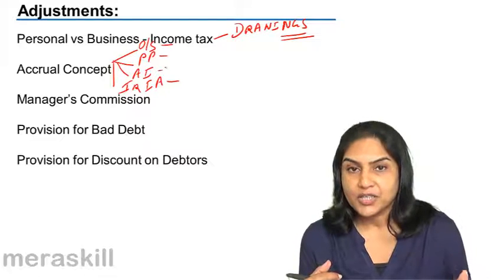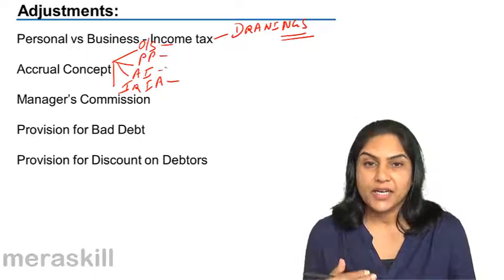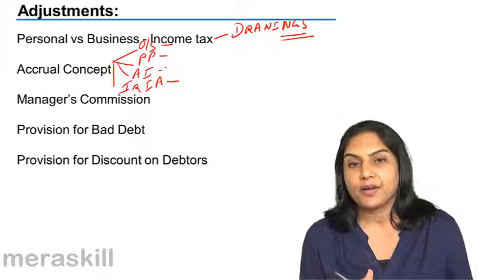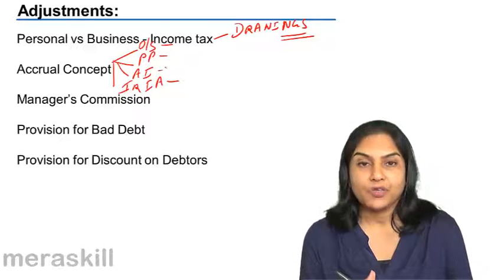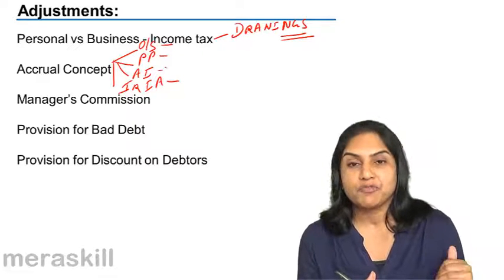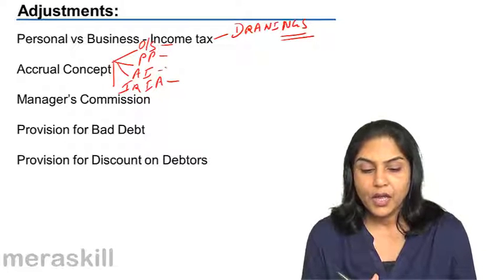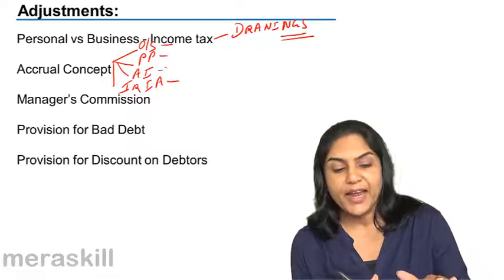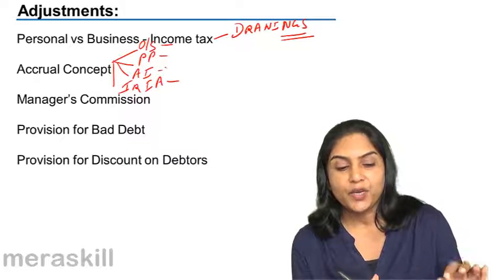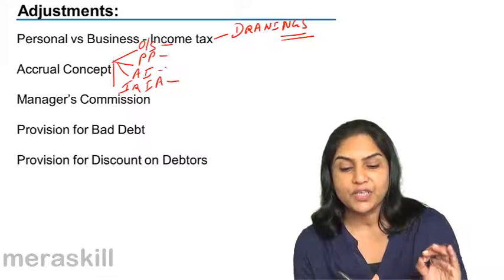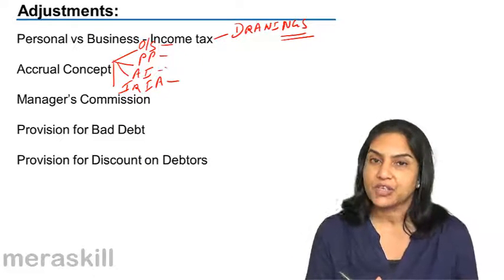As per the accrual concept, all expenses and income for the current year must be brought into the books whether actually paid or received or not. Therefore, at the end of the year, we may have to make certain adjustments for outstanding expenses, prepaid expenses, accrued income, or income received in advance.